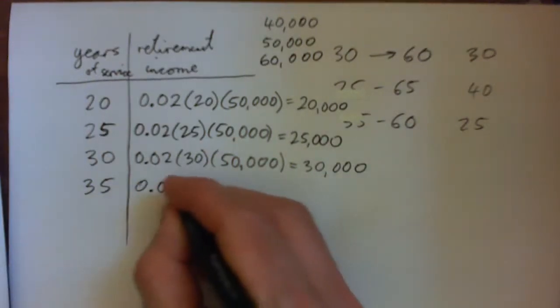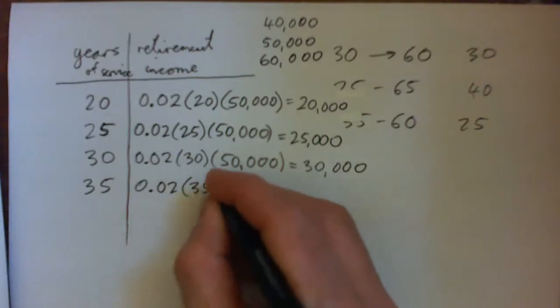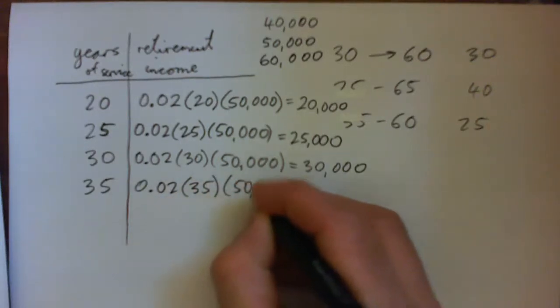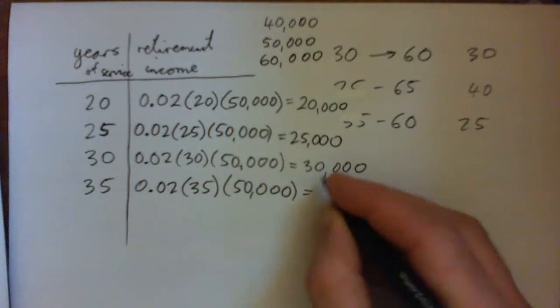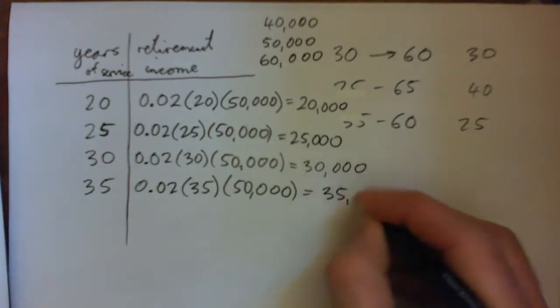And then if I did this one, I'm overdoing it here you guys don't have to do this much, but I'm just overdoing it for fun. And that will work out to be 35,000, right.